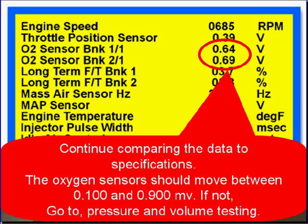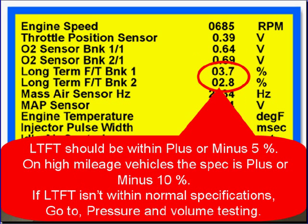Continue comparing the data to specifications. The oxygen sensor should move between 0.1 and 0.9 volts. If not, go to pressure and volume testing. Long-term fuel trim should be within plus or minus 5% on high mileage vehicles; the spec is plus or minus 10%. If long-term fuel trim isn't within normal specifications, go to pressure and volume testing.